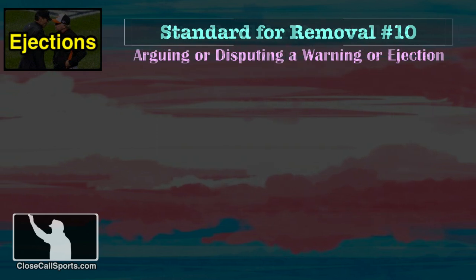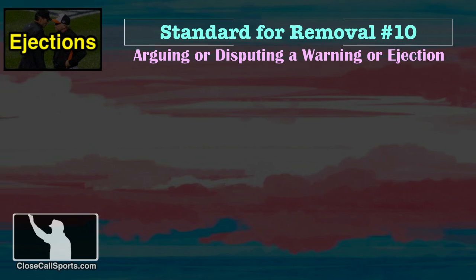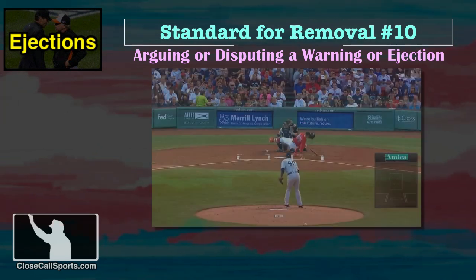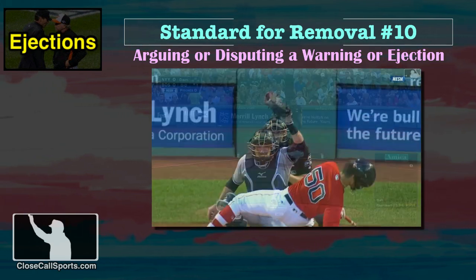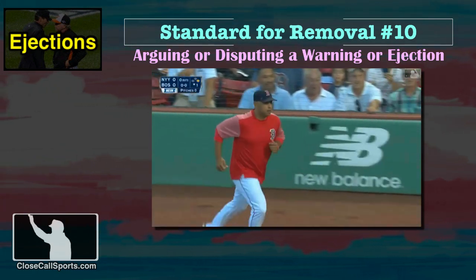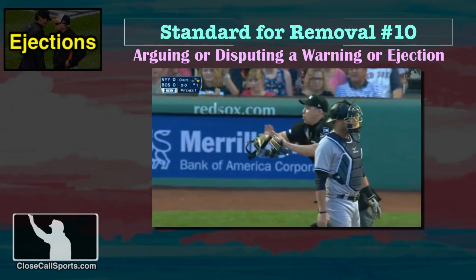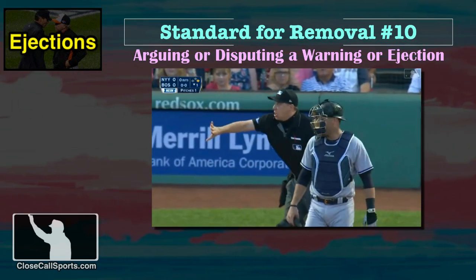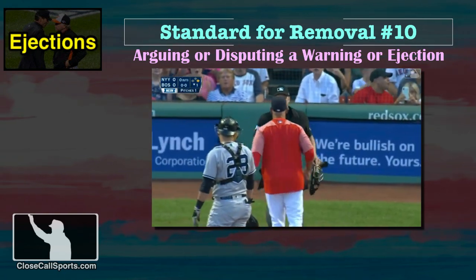The tenth standard for removal is arguing or disputing a warning, ejection, or lack of ejection or warning. He knocked him down on the seat of his pants, and now warnings from home plate umpire Adam Hamari — he is warning both benches. Here comes Cora. Adam Hamari's telling him to get back, and now he's throwing him out of the ball game.